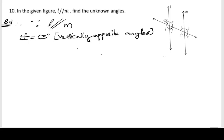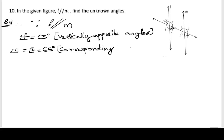Next, the position of F and the position of C are the same, so we can see them as corresponding angles. Angle C is equal to angle F, and angle F is 65 degrees. Therefore angle C equals 65 degrees, because corresponding angles are equal.